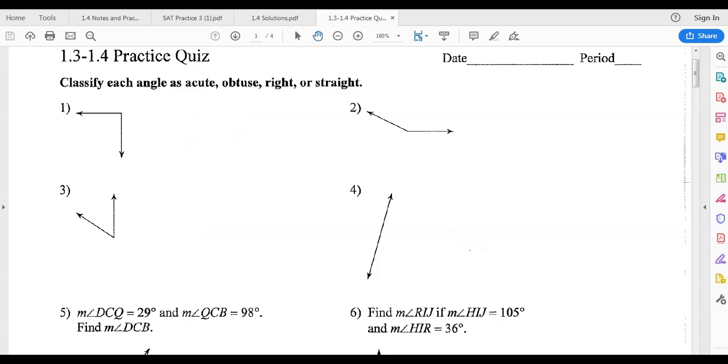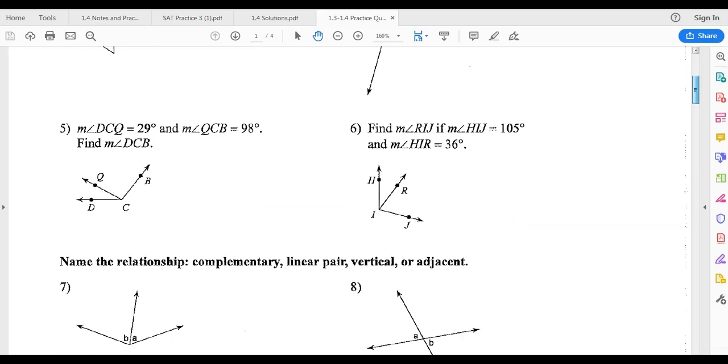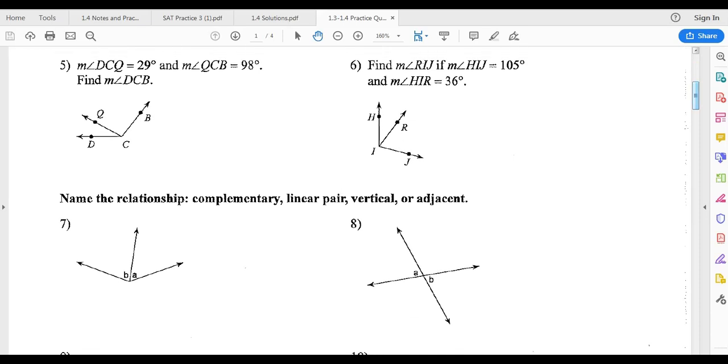Okay. Moving right along. Down here at number 5, I have the measure of DCQ. So DCQ right there, that's 29. QCB, which is right here, is 98. And they want me to find DCB. So they want me to find the entire angle. So I'm going to add those two together. And I'm going to get, well, will that be 127? So 127 degrees is your answer there for number 5.